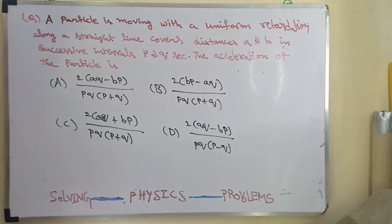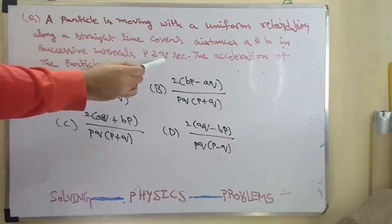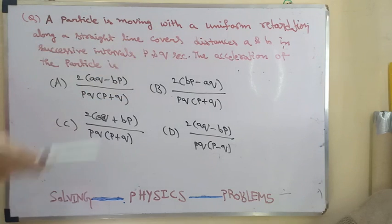This is a video on a very nice problem. A particle is moving with a uniform retardation along a straight line, covers the distances A and B in successive intervals P and Q seconds. The acceleration of the particle is given by 2 times AQ minus BP divided by PQ into P plus Q.